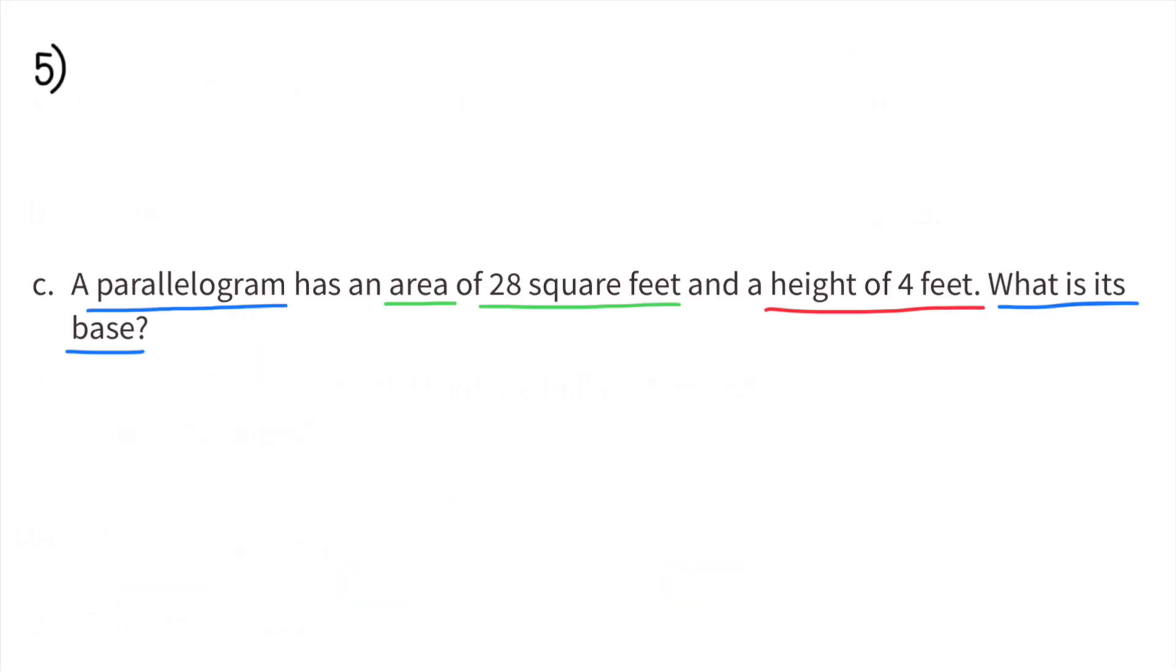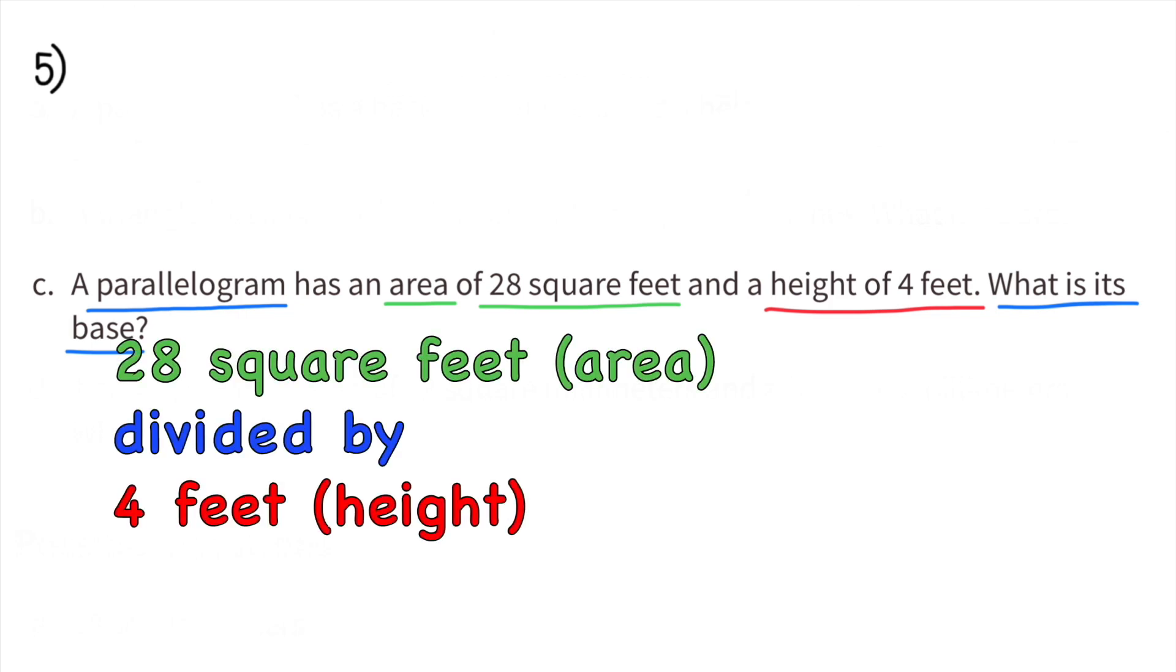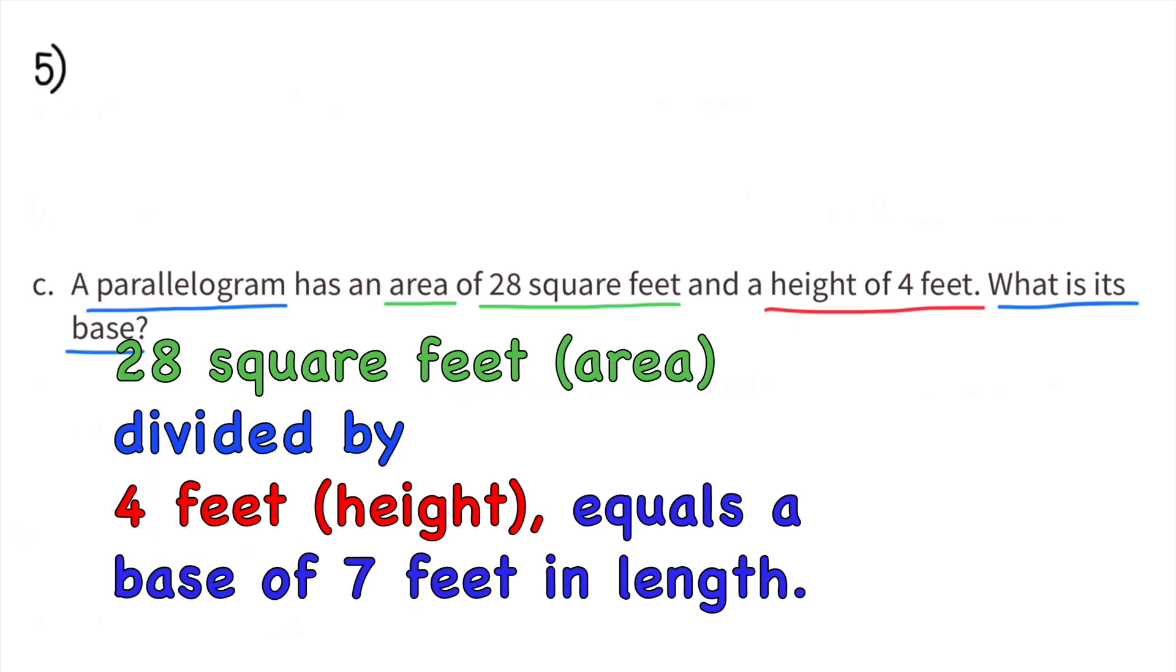Part C: A parallelogram has an area of 28 square feet and a height of 4 feet. What is its base? So now they've given us the area and the height of 4 feet, so we need to figure out the base. 28 square feet (the area) divided by 4 feet (the height) will give us the base. 28 divided by 4 equals 7. The base of this parallelogram is 7 feet in length.